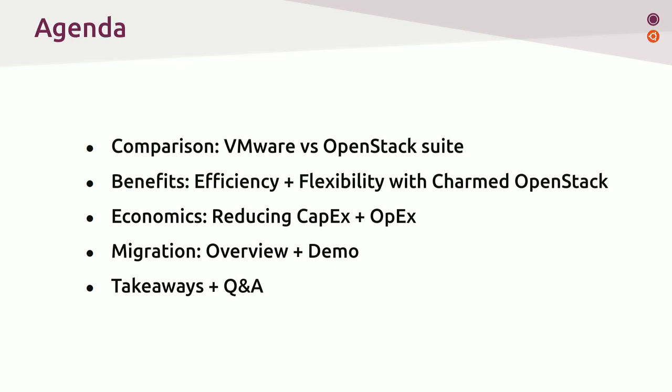We are going to navigate through a comparison between VMware and OpenStack suites and try to find a common ground so that we could compare apples to apples. I am going to show the benefits of using Charmed OpenStack, such as efficiency and flexibility, and discuss what makes Charmed OpenStack different from other OpenStacks available. We'll also run a sample cost scenario showing how you can reduce both CAPEX and OPEX by migrating from VMware to Charmed OpenStack.